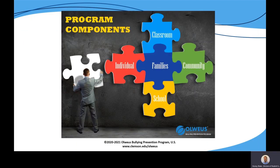Research shows that bullying prevention needs to happen on multiple levels to be effective. The four OVEAS program components are school-wide, classroom, individual, and community. And as you'll see in the center of this illustration, families — families are extremely important for the success of the OVEAS program, as they impact all other areas.